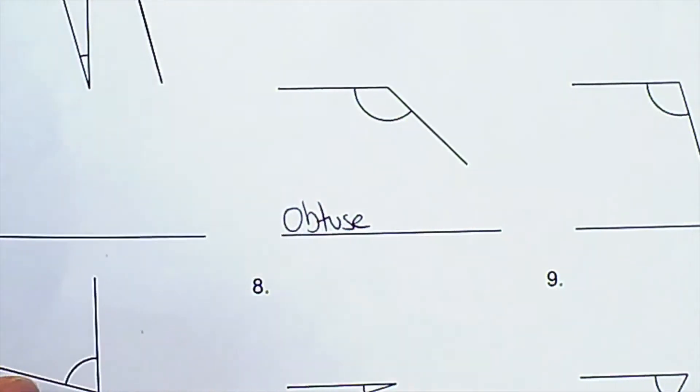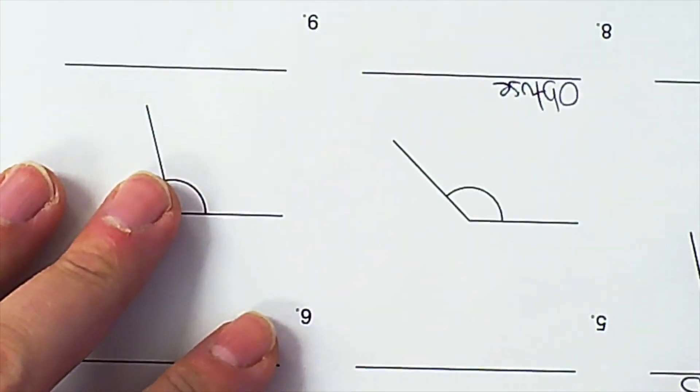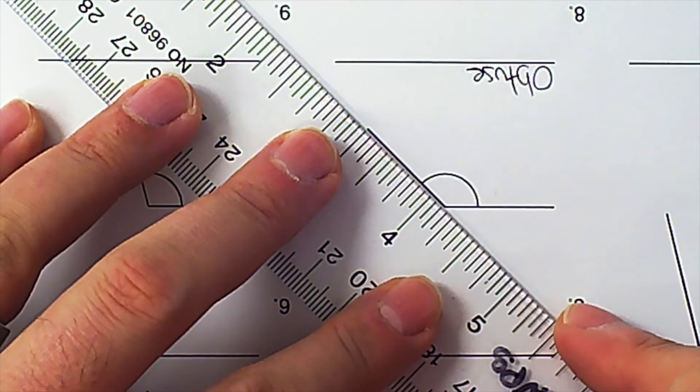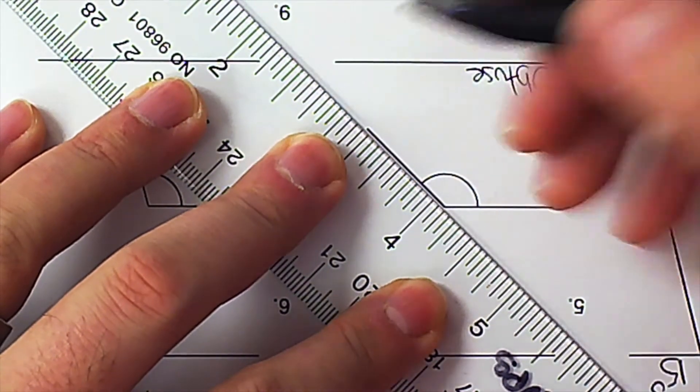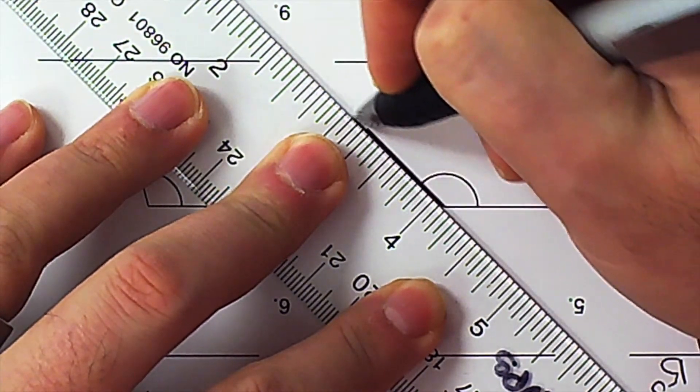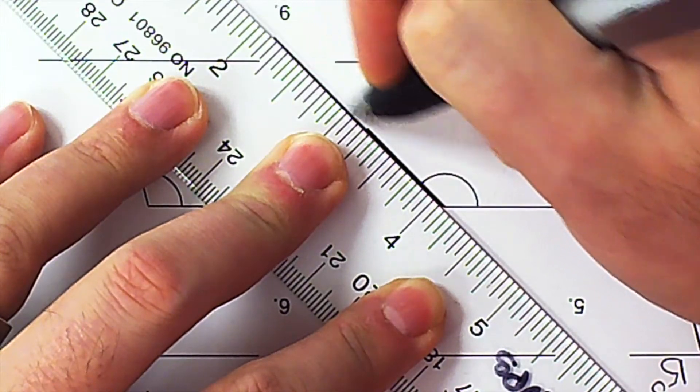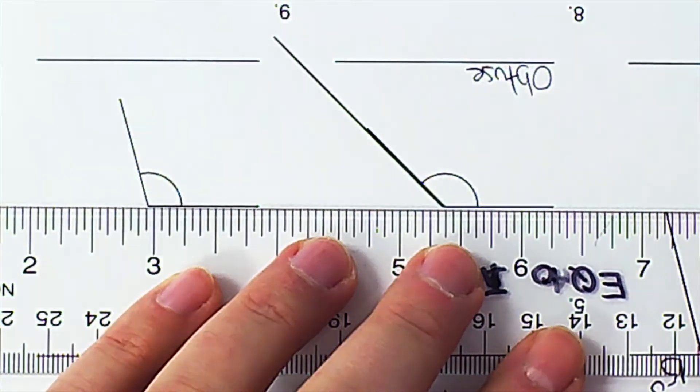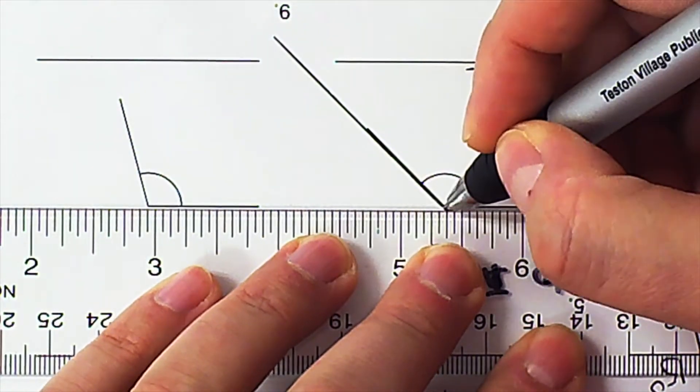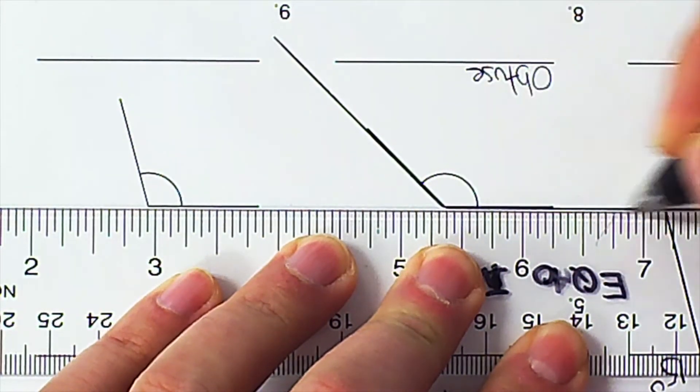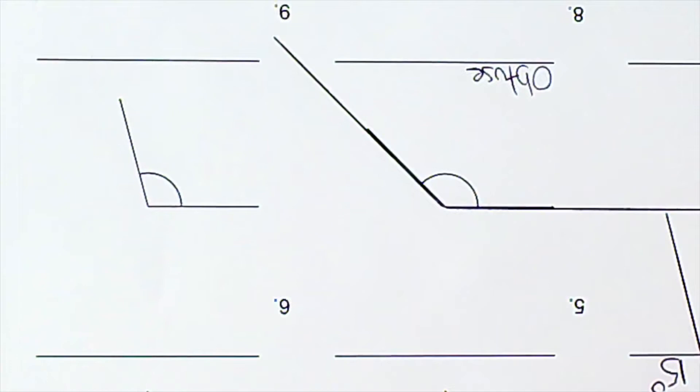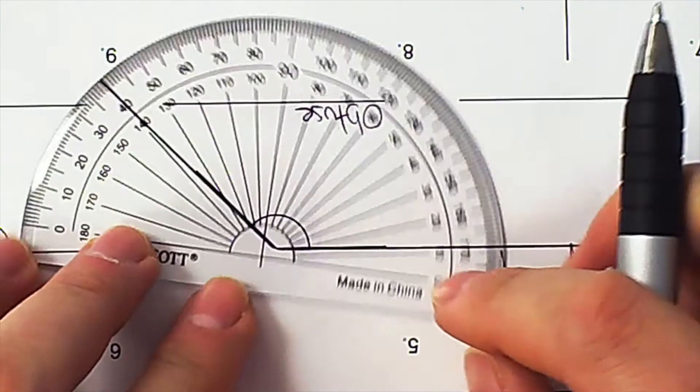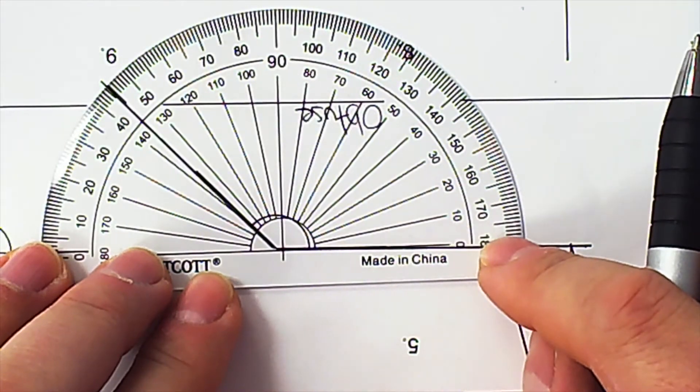So we know it's an obtuse angle and again this one here I'm going to extend the line once again just to make it a little bit easier to measure. I'm also going to extend this bottom line here too. There we go. So I've extended both lines. Look how big those lines are, no confusion whatsoever.